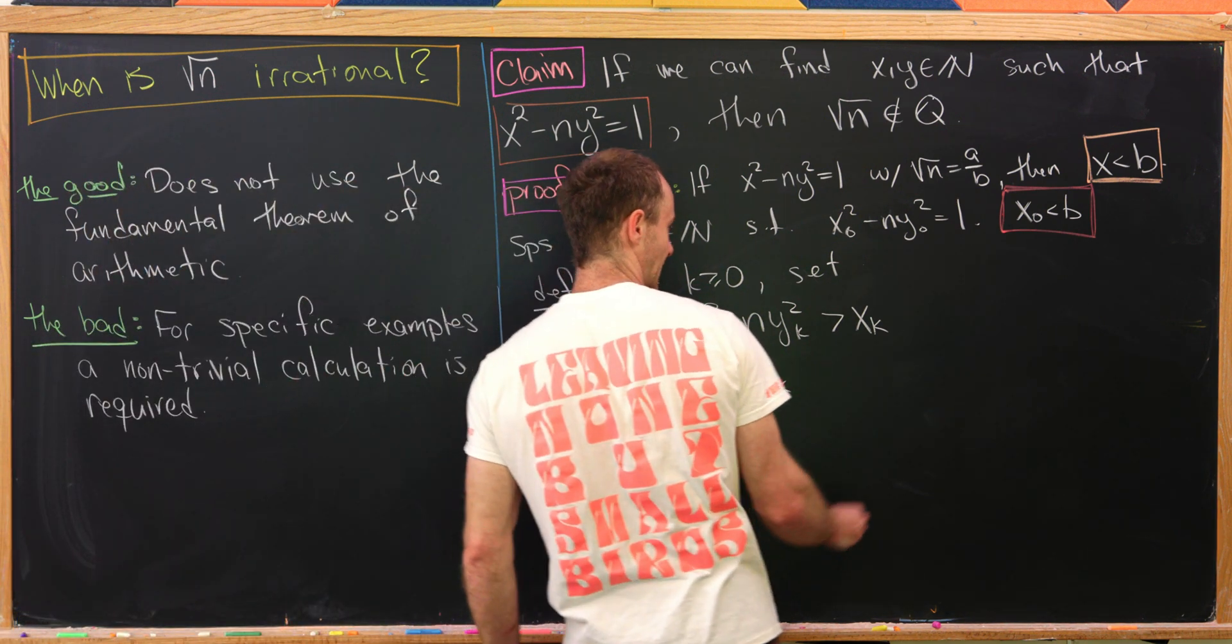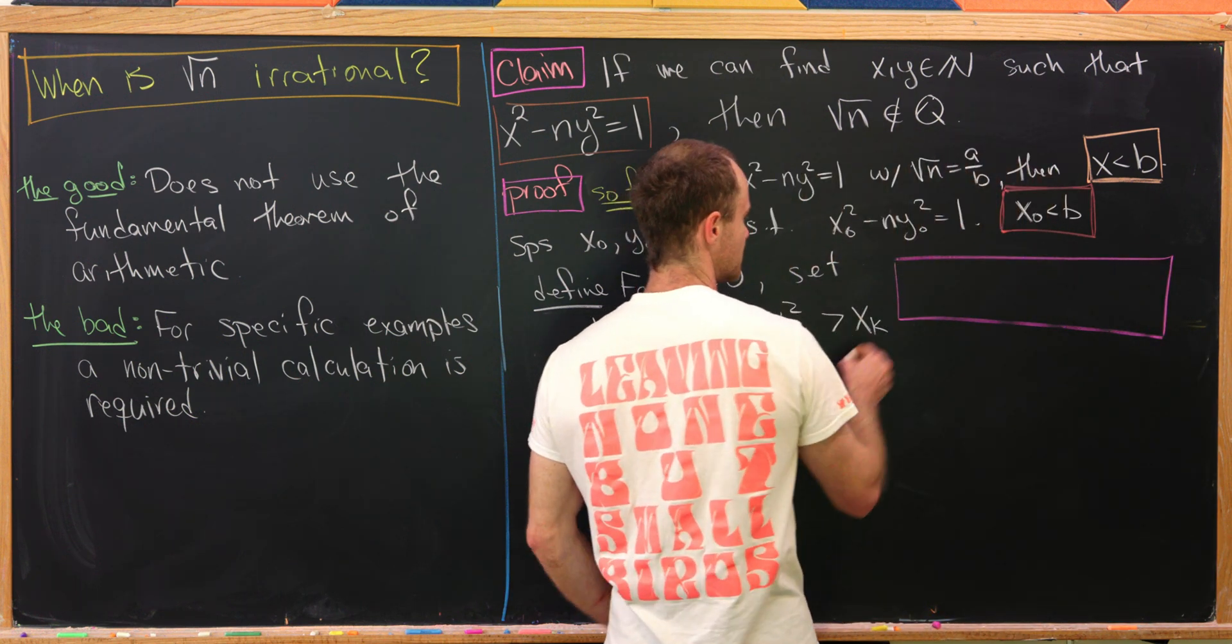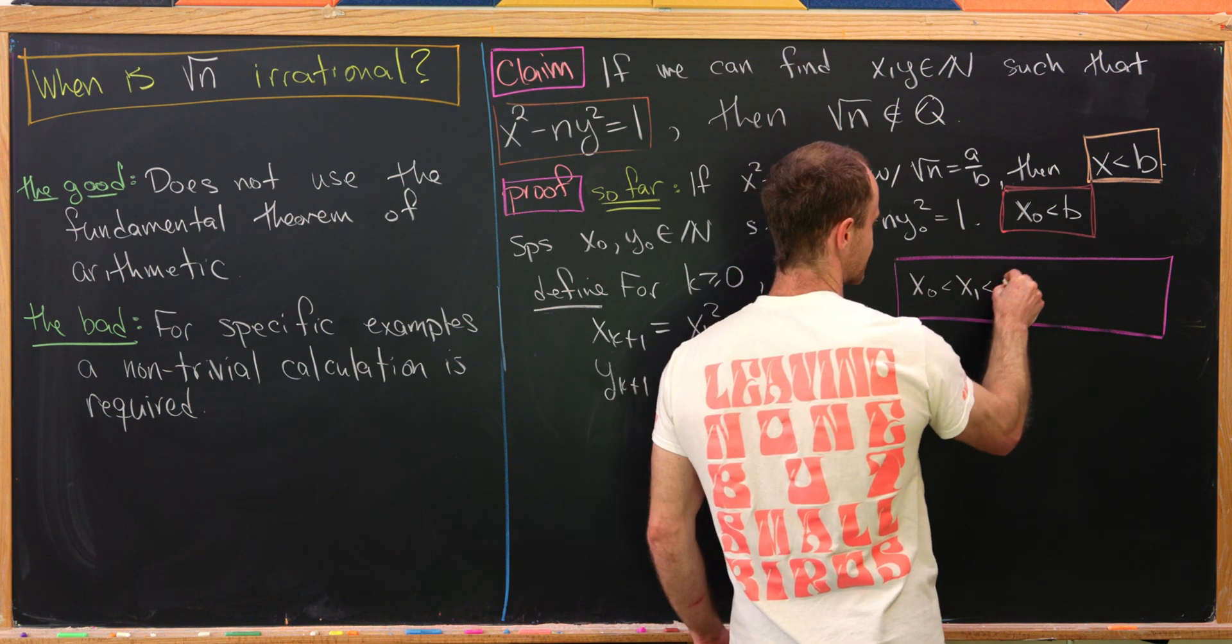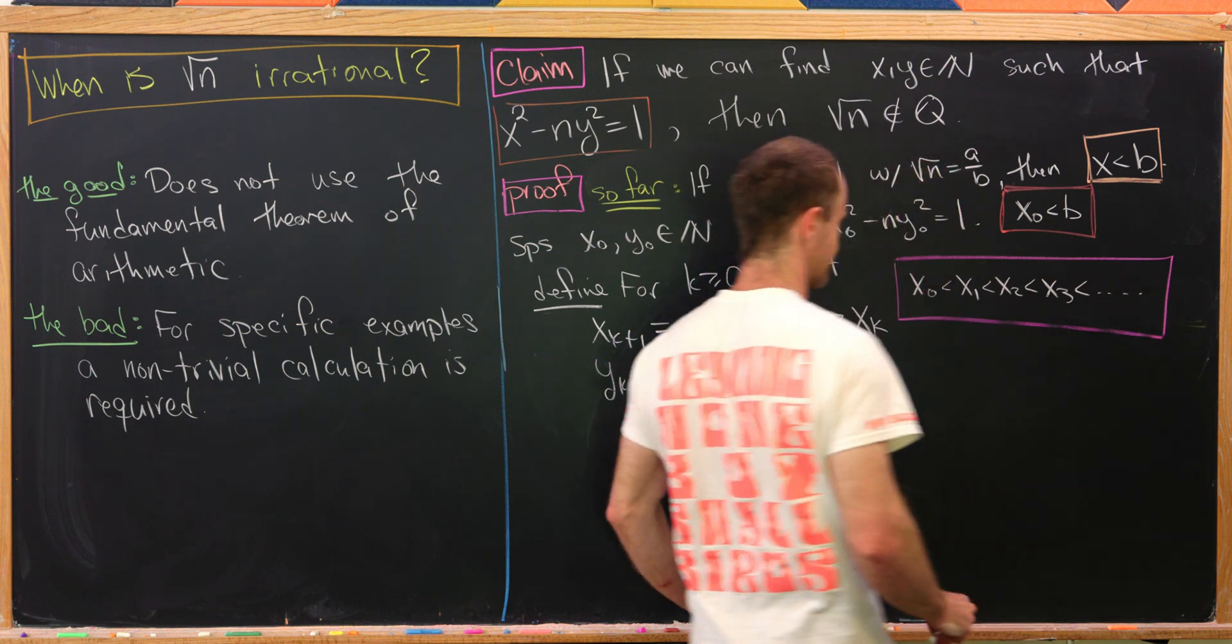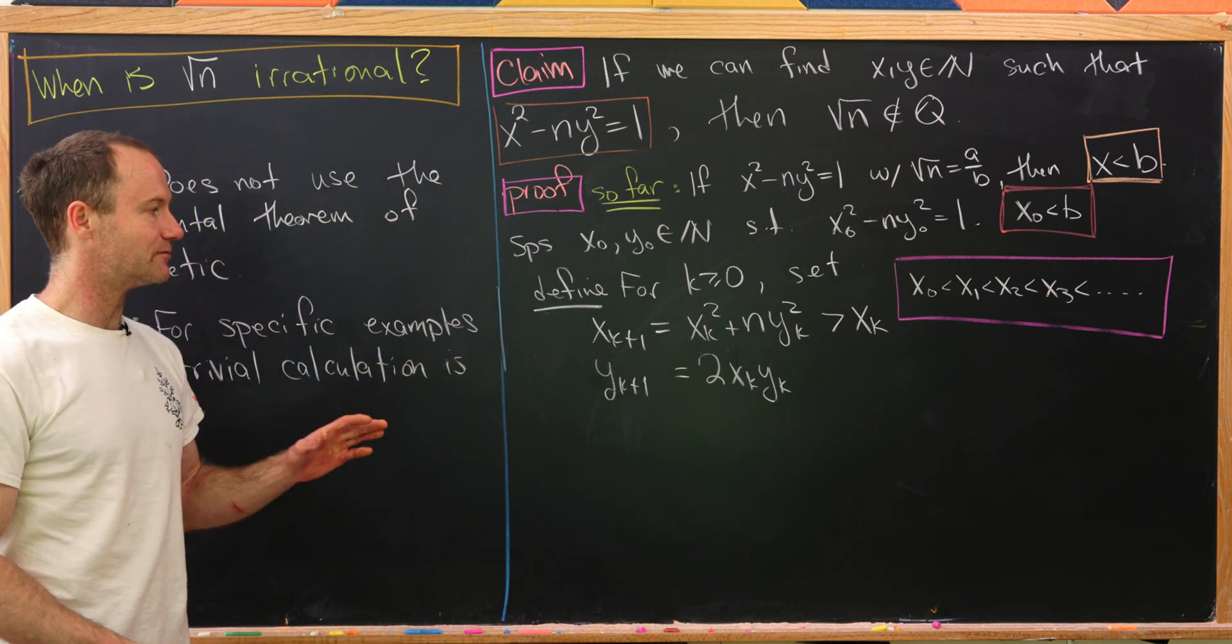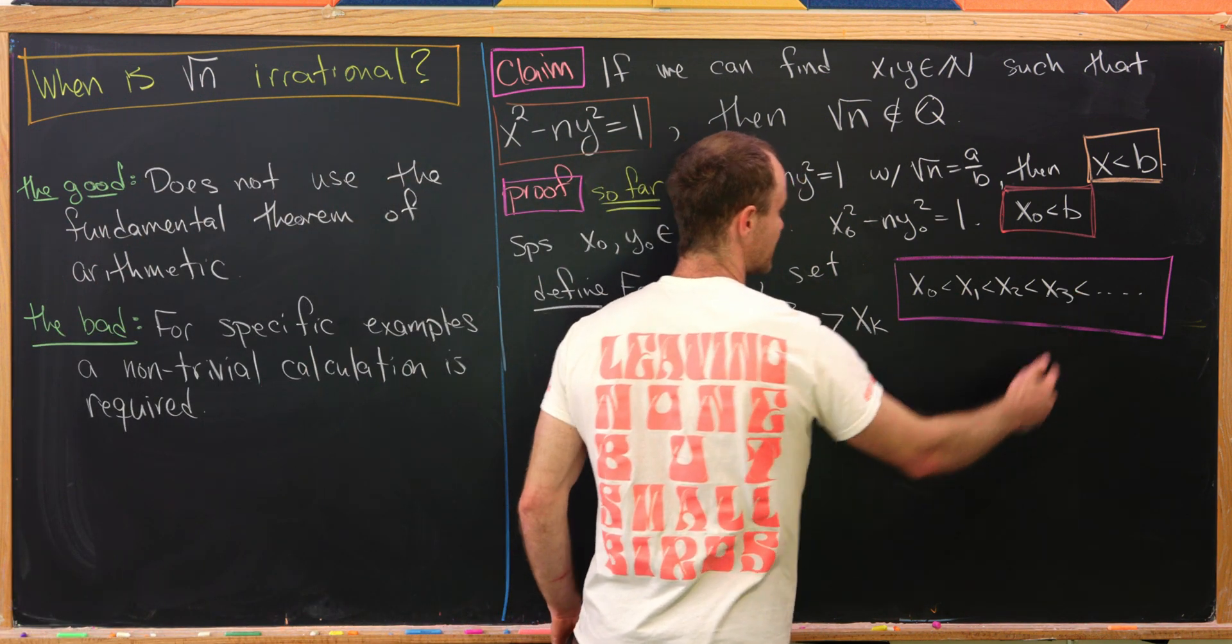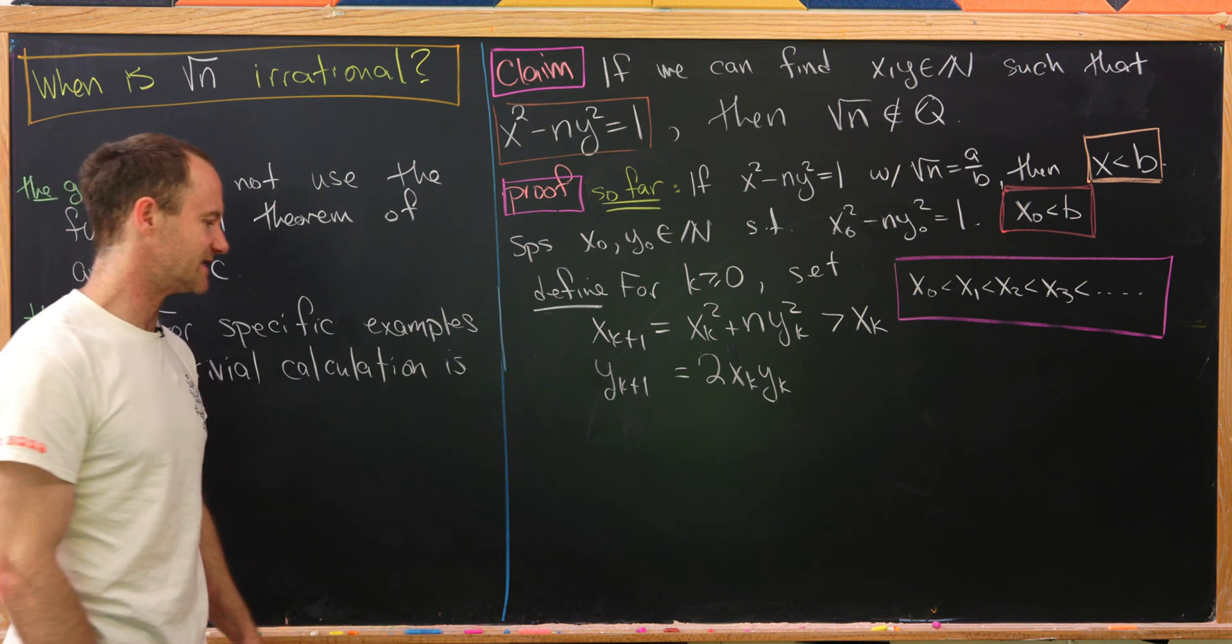In particular, that gives us an increasing sequence of numbers. We start here at x naught, and then we'll have x1, which is bigger, x2, which is bigger, x3, which is bigger, so on and so forth. We know x naught is less than b because it satisfies this equation. And as you might guess, what we will prove is that all of these also satisfy the equation, and we'll do that inductively.